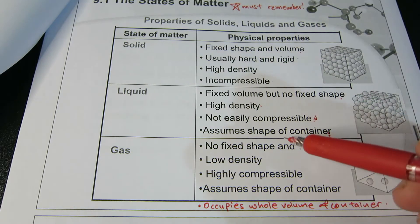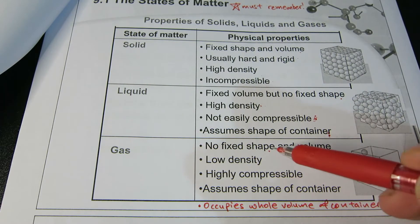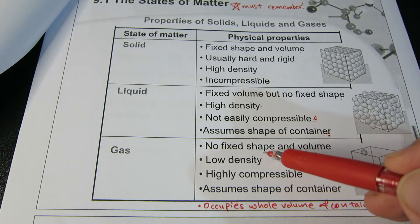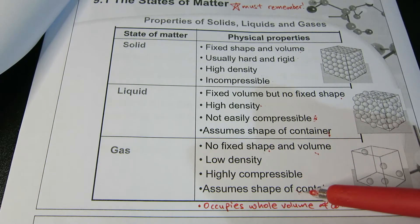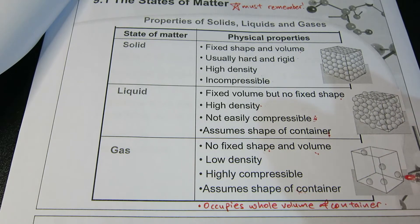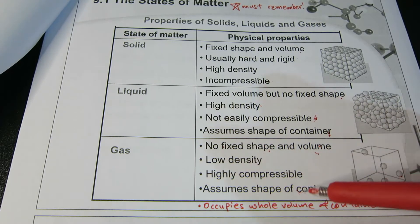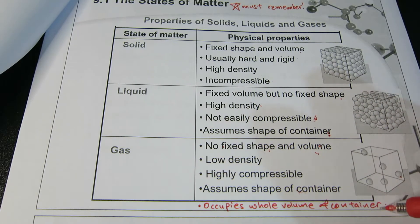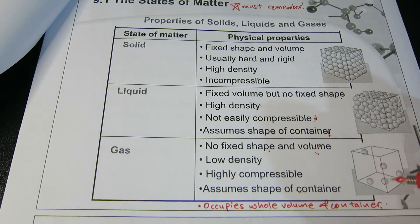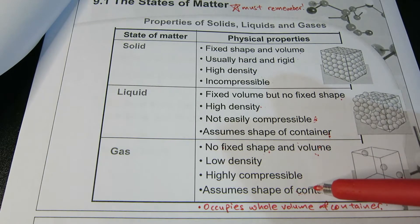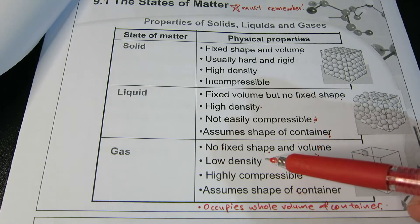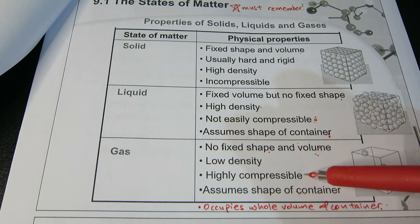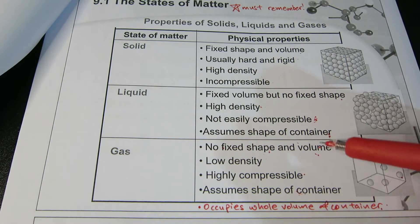For gases, they have no fixed shape and no fixed volume. They will assume the shape of the container — if you put gas in a cubic room, they will occupy the shape of the room, and they will occupy the entirety of the volume. Gases are very low density and very compressible. These are the few properties, and all of this you must memorize and know.